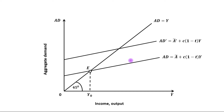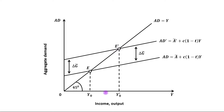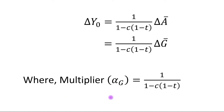This is our new aggregate demand curve, denoted by AD dash. The difference between these two AD curves will be the change in G̅ (government expenditure). The new equilibrium will be achieved at point E dash, and the new equilibrium level of output will be OY dash.